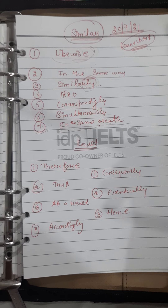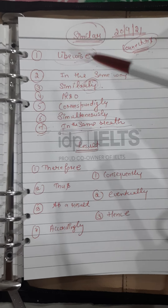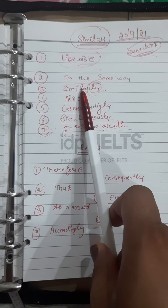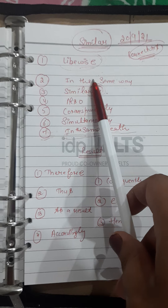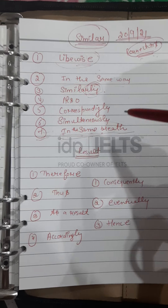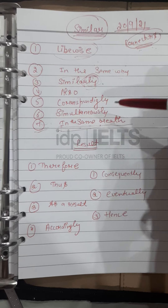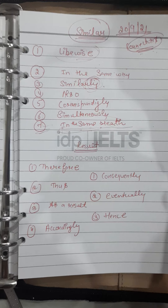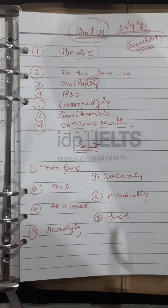The main point to take care of is that you should not use the same connector repeatedly. For example, once you have used 'in the same way', if in the second body paragraph you again need a connector showing a similar trend, you should avoid 'in the same breath' because the grammatical structure of both connectors is the same. It would be better to use simultaneously, correspondingly, also, similarly, or likewise instead.